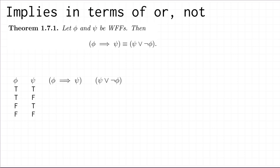So what this theorem says is: if you have two well-formed formulas phi and psi, then phi implies psi is logically equivalent to psi or NOT phi.